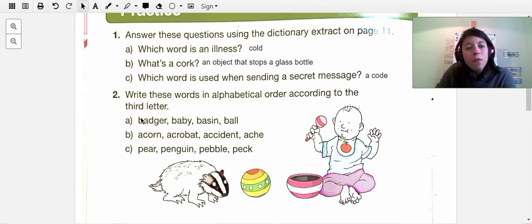So in the first letter A you have badger, baby, basin, and ball. They all begin with the letter B, and they all have A as the second letter. Now what you have to determine is which goes first: badger, baby, basin, or ball.